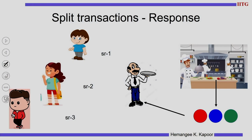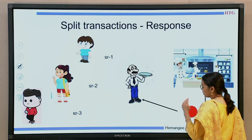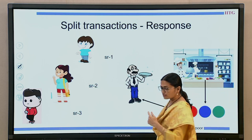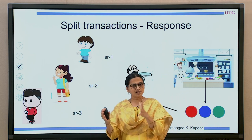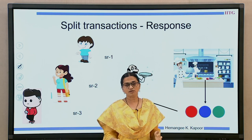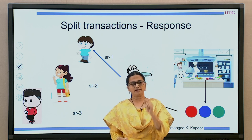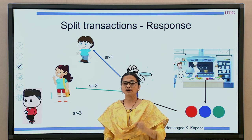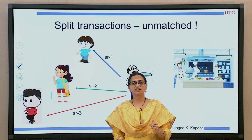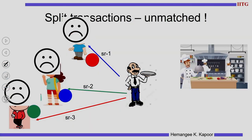Now this service person has to give the items to the respective customers. He thinks that whatever is the first dish he gets from the kitchen he should give it to the first customer. So he gives the red dish to the blue customer, the blue dish to the green customer, and the green dish to the red customer. Now what happens? All get wrong items and they are all unhappy.